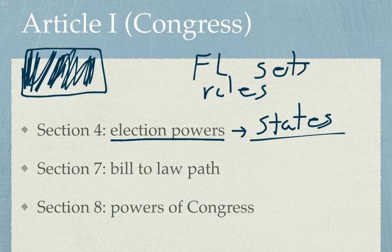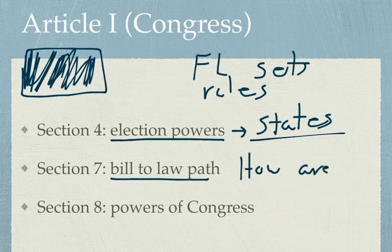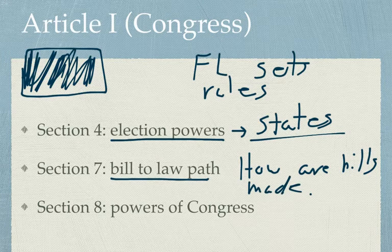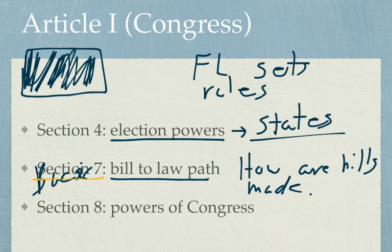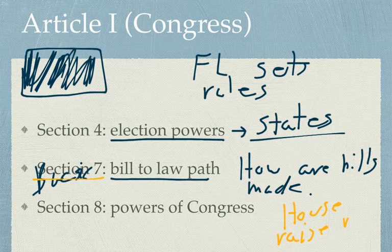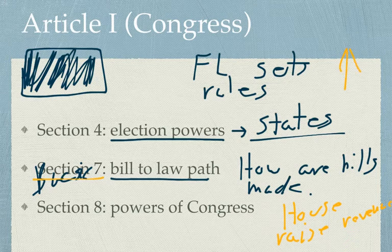Article 1, Section 7 gives us the basic bill-to-law path — how are bills made? We're going to do this in detail in a later section on Congress and go deeper than just the basics, but this is the basic outline found in Article 1, Section 7. Another interesting unique House rule is also found here: only the House can raise revenue, meaning change taxes. So if you have a bill that's going to increase taxes, it has to originate in the House.